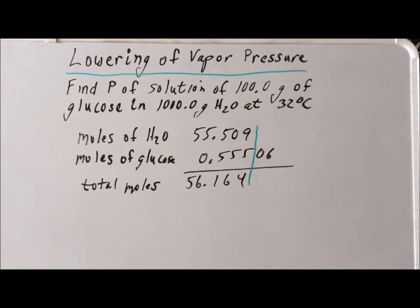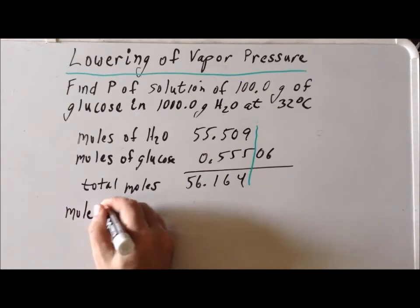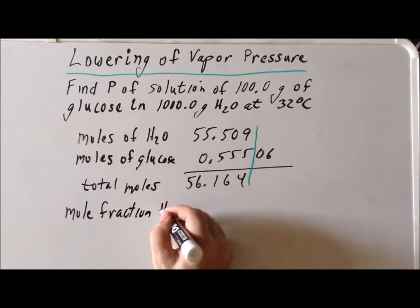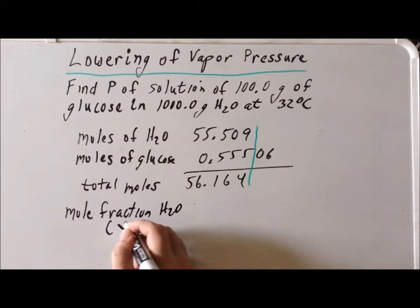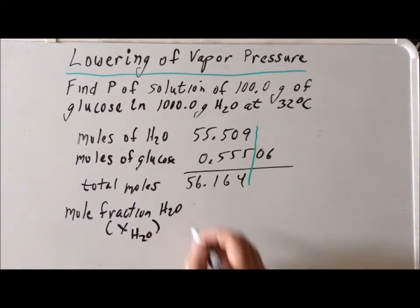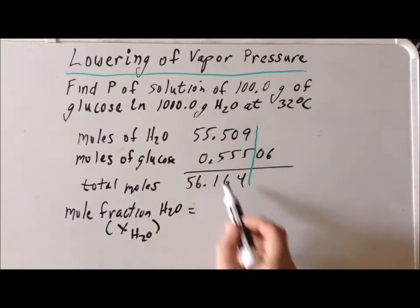Now we can calculate the mole fraction of water, which often uses the symbol X_H2O, and is equal to the moles of H2O divided by the total number of moles.